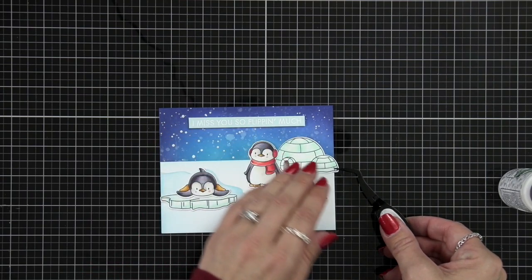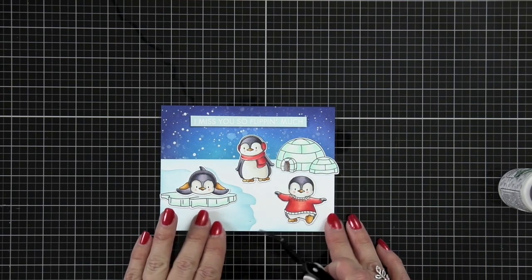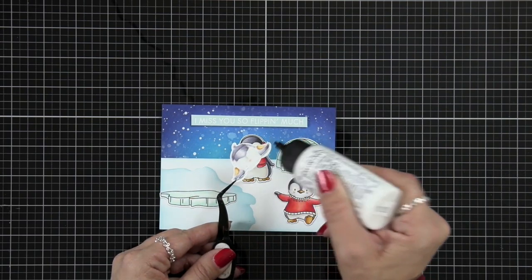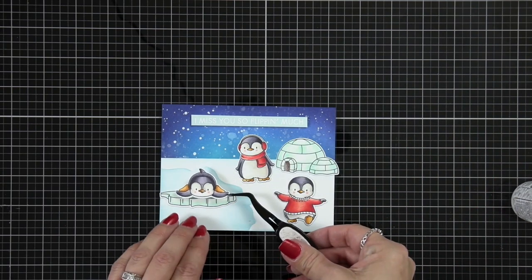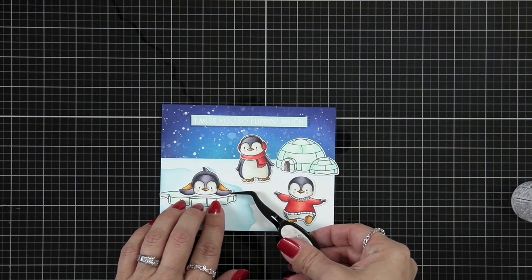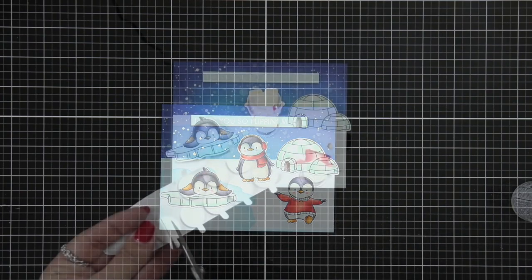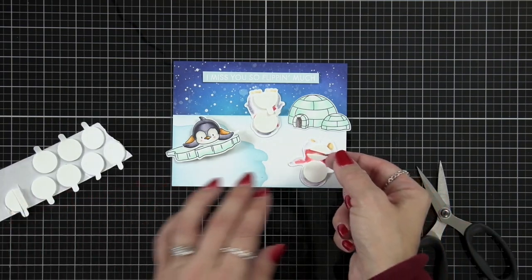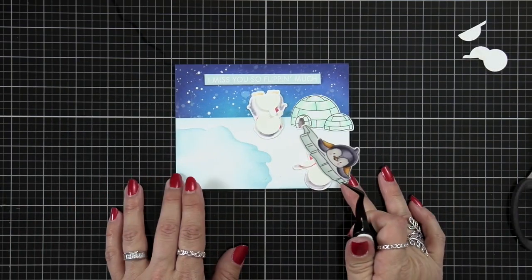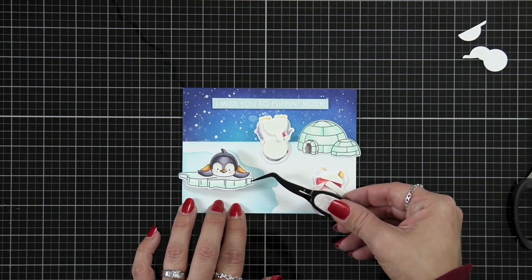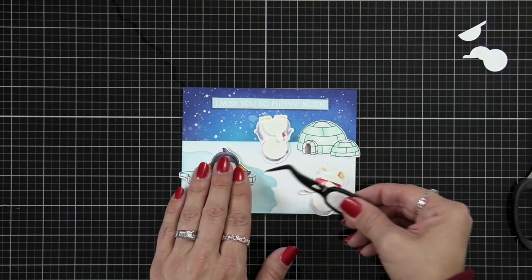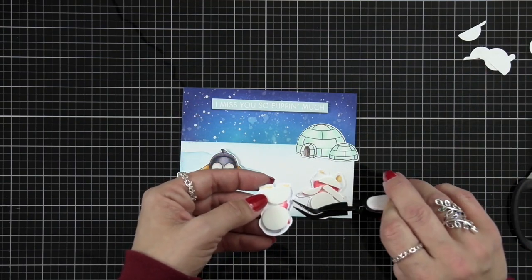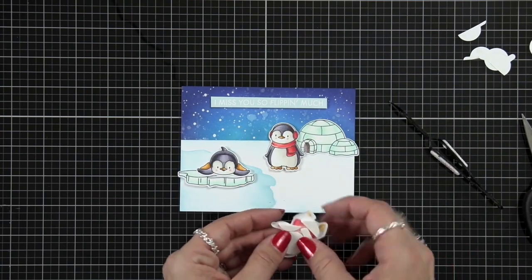Then I can start building my scene so the igloo is going to go the furthest in the back of the scene so that I applied just straight to the cardstock. The penguin on this kind of iceberg this plate of ice I glued the penguin to that so that it was kind of one piece and then I went ahead and added foam squares behind all of my critters. After I removed the backing of the foam squares I'm using my tweezers to just carefully place them into my scene.